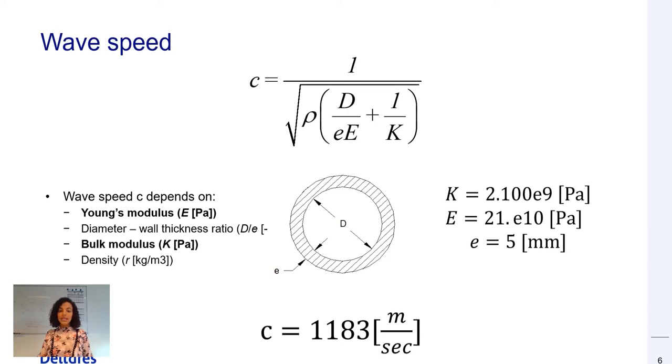In our case, the liquid is water. The bulk modulus value for water is automatically updated in Wanda in the fluid window. And we assume the following values for our Young's modulus and wall thickness. By conducting the calculation, we get a wave speed of 1,183 meters per second.